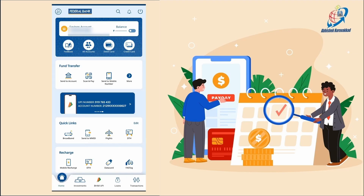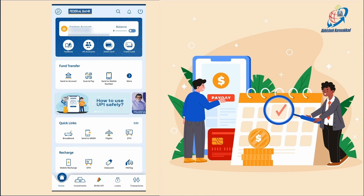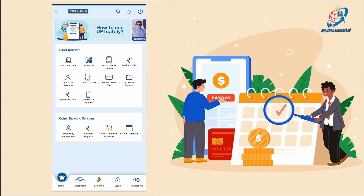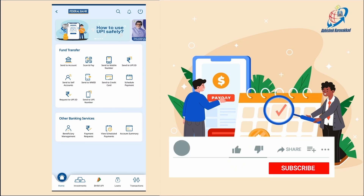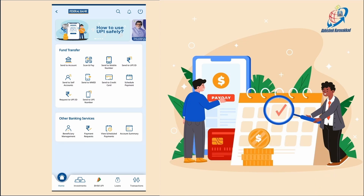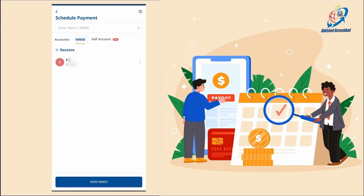Now we will open Fedmobile. When we open Fedmobile, we will click on a card. We will see three sub-tabs of the account: the account benefits, the transactions, and the credit card amount.